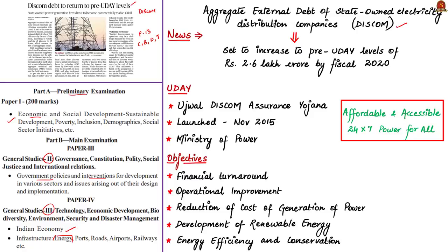The news is that the aggregate external debt of the state-owned electricity distribution companies, in short called Discoms, is set to increase to the pre-Ujwal Discom Assurance Yojana levels of Rs. 2.6 lakh crore by the end of this fiscal. This is based on CRISIL's analysis of Discoms in 15 states, which account for 85% of aggregate losses. A fiscal year is denoted by the year in which it ends; so fiscal 2020 runs from 1st April 2019 to 31st March 2020.